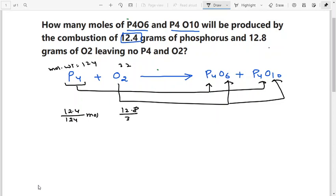All of this is consumed and this is also consumed. Let's say this produces a moles and this produces b moles.